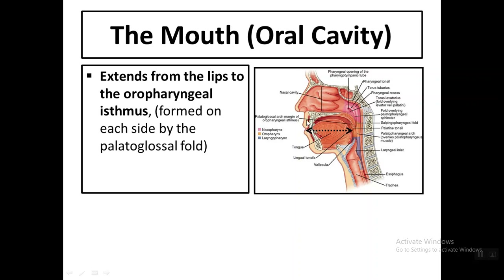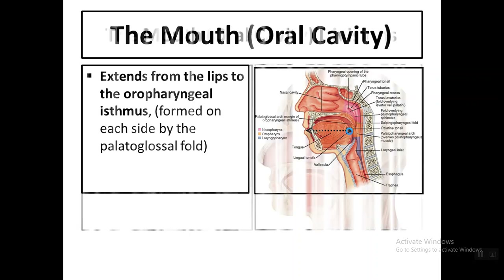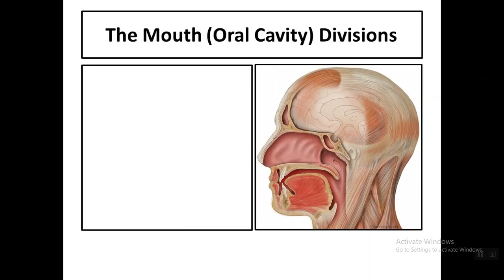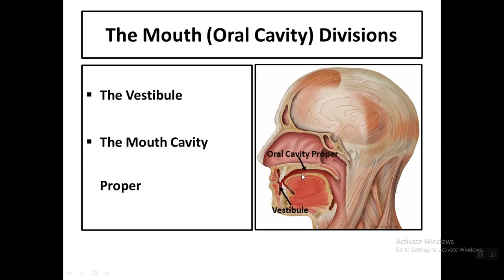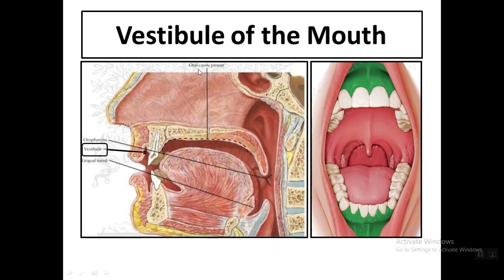The oral cavity extends between the lips and the oropharyngeal isthmus. The mouth or oral cavity can be divided into: first, the vestibule — a slit-like space between the lips and teeth — and the mouth cavity proper. The vestibule, shown here in green, is a slit-like space extending between the lips and cheeks.